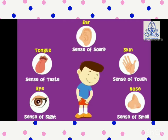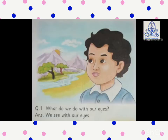Chalo, ab humaray organs ke baare mein hum zyada learn karte hai. First, eyes. What do we do with our eyes? We see with our eyes. It helps us to see the natural scenes around us — humaray aaspaas kya ho raha hai.